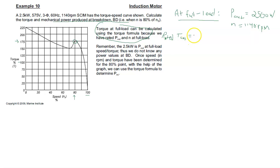...is equal to 9.55 times P out divided by N. So 9.55 multiplied by 2500 watts divided by 1140 RPMs gives us the rated torque, which is equal to 20.94 newton meters.